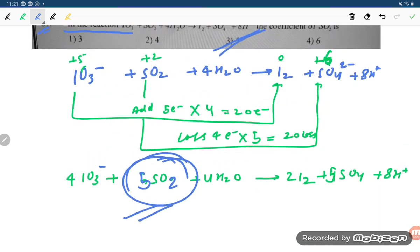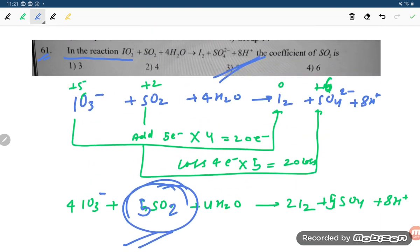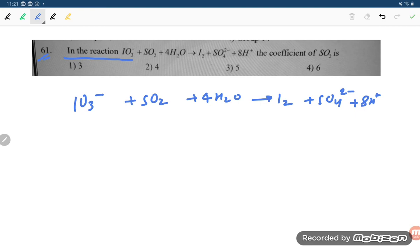5 only. Okay, so we are not going to check. We are checking with the oxidation number method. So we got that 5 SO2 molecules are getting involved. So correct option is option number third student. Thank you so much for watching friends, thank you so much.